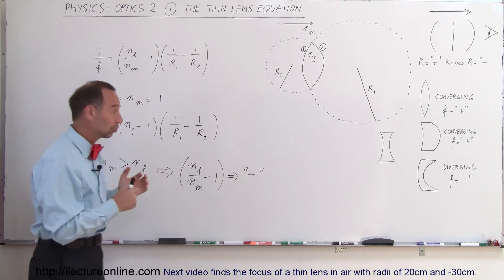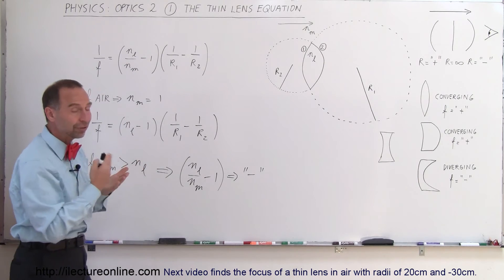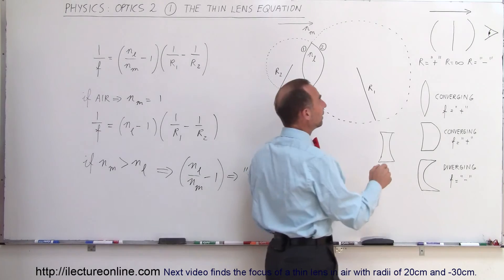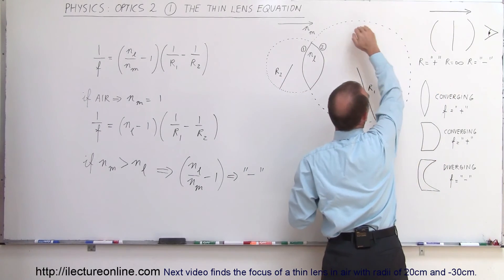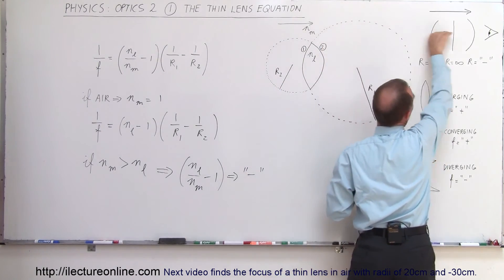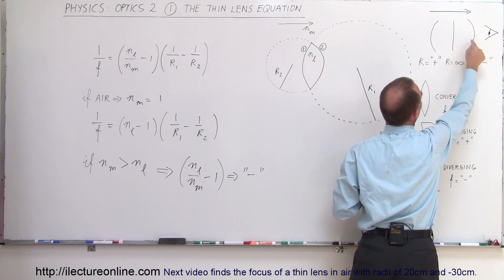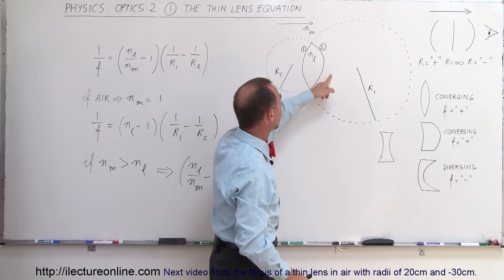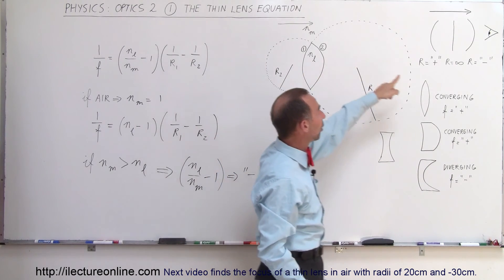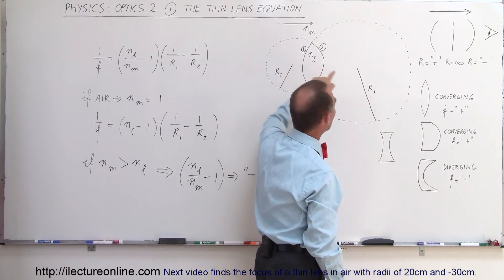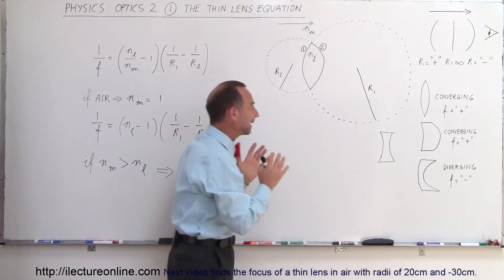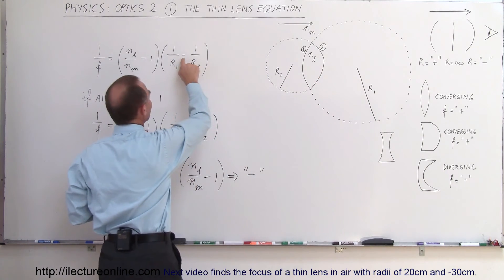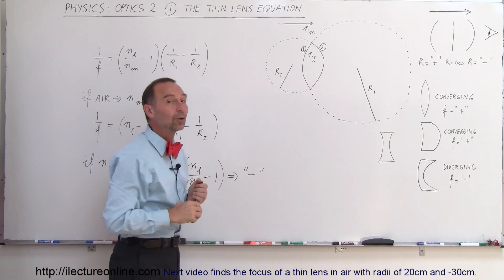In the next video, I will show you an example of how to use this equation — how to actually calculate the focal length of a lens. Notice that by convention we always imagine the rays going through the lens from left to right, which sets the convention for the curvature of the lens surfaces. It doesn't matter whether it's the front or the back — for example, here the back is a negative curvature and the front is a positive curvature, and the equation handles that via the negative sign associated with 1 over R2.